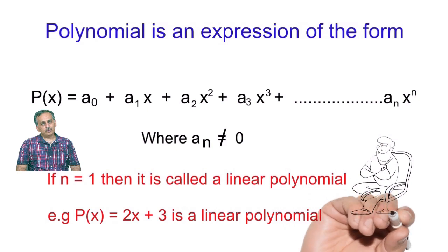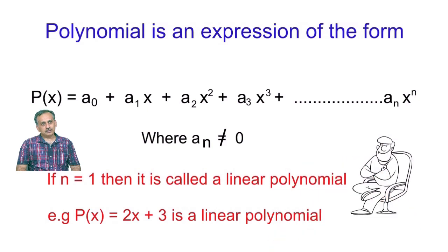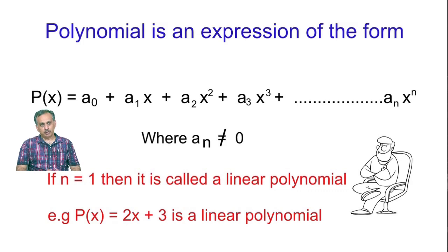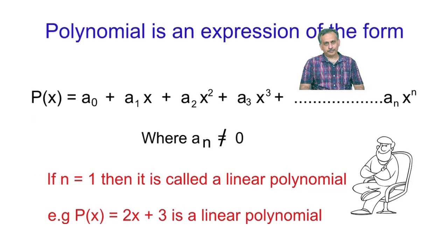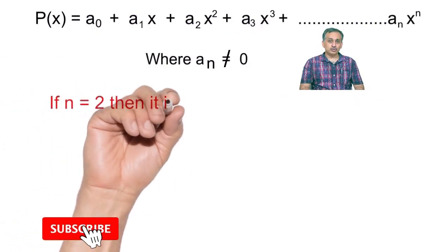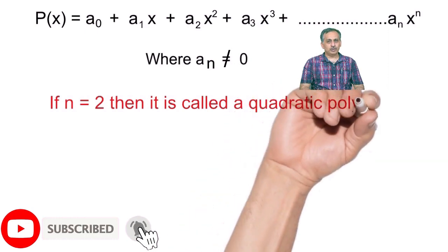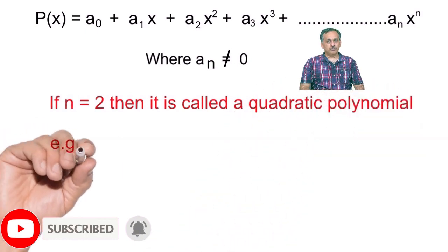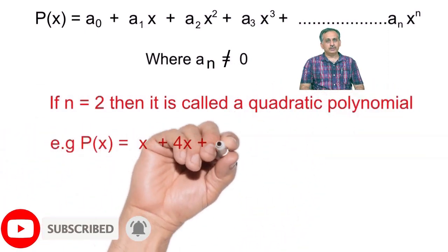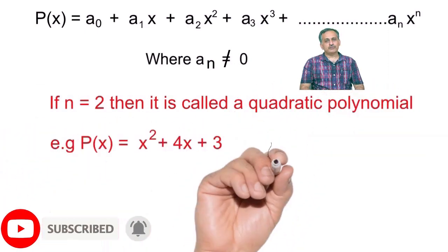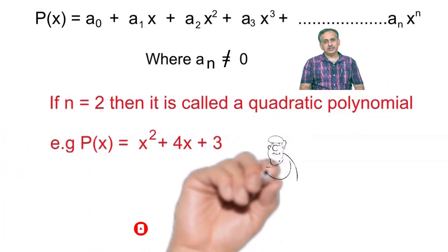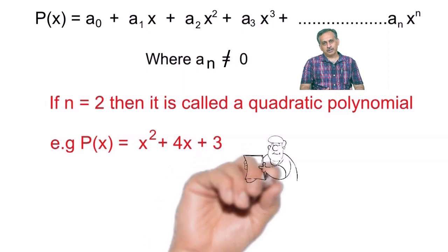If n is equal to 1 then it is called a linear polynomial. For example, 2x plus 3 is a linear polynomial. If n is equal to 2 then it is called a quadratic polynomial. For example, x square plus 4x plus 3 is a quadratic polynomial.